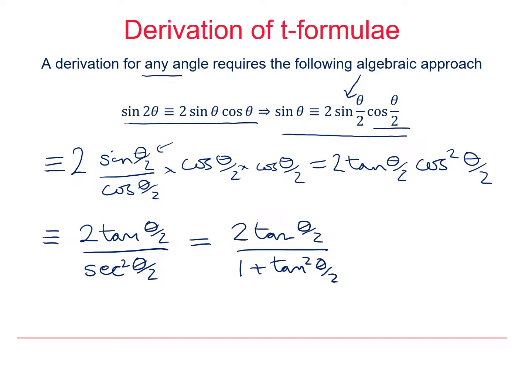Now you can see that I've got all my trig functions as tan(θ/2), so I can just replace the tan(θ/2) with t. So that becomes 2t over 1 plus t².